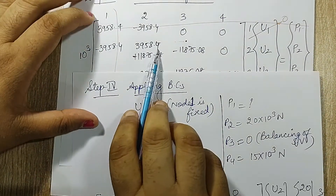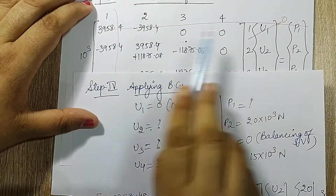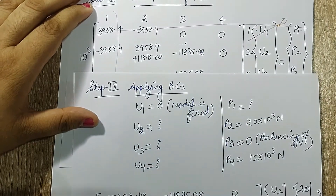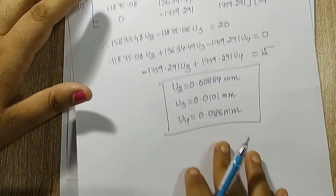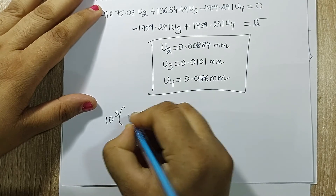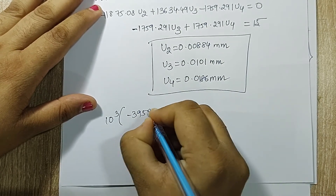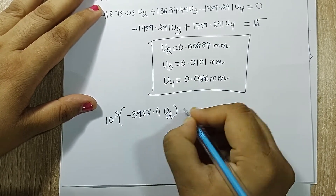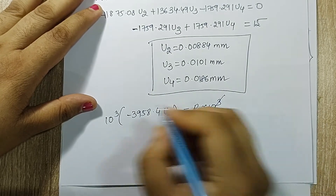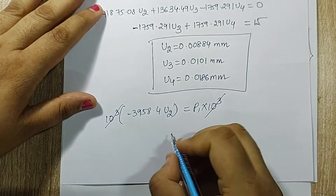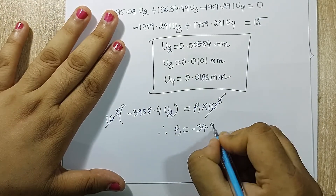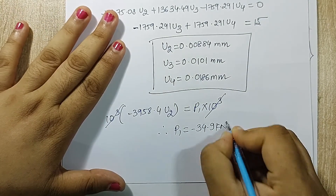Going back to the first equation with u1 = 0, only the u2 term exists. So I have 10³ × (−3958.4 × u2) = p1 × 10³. The 10³ cancels from both sides and I get the value of p1 as −34.9 kN.